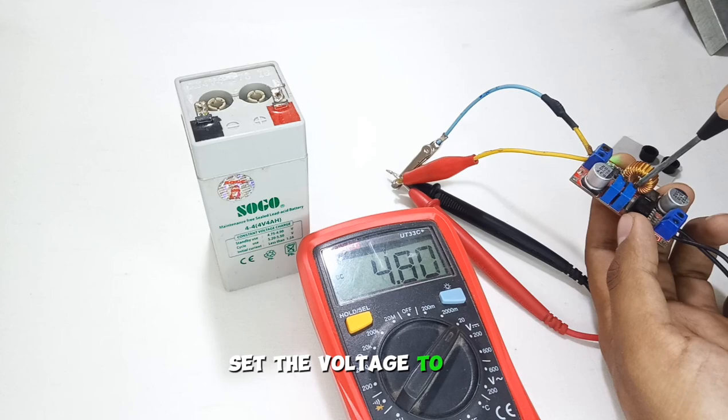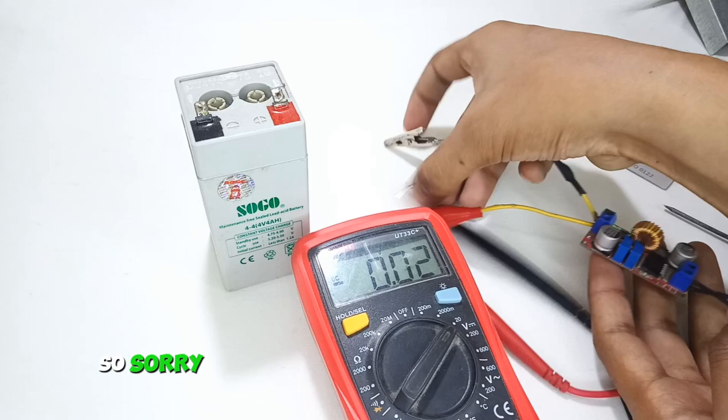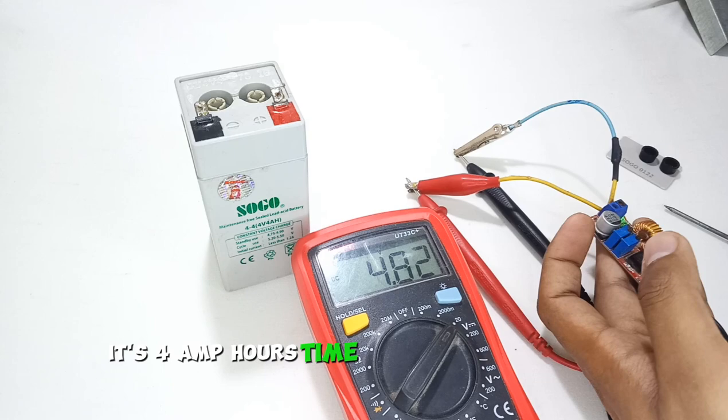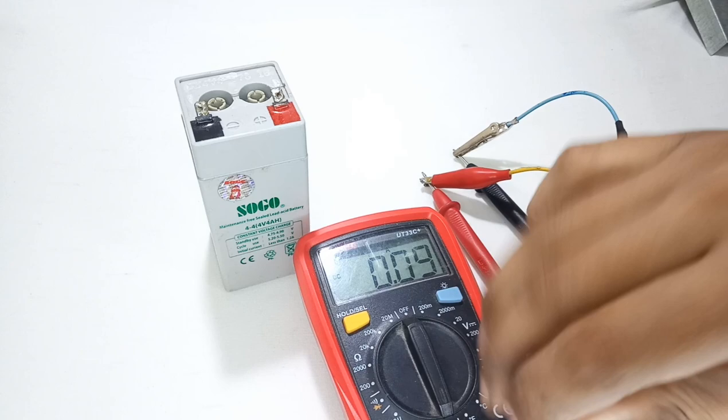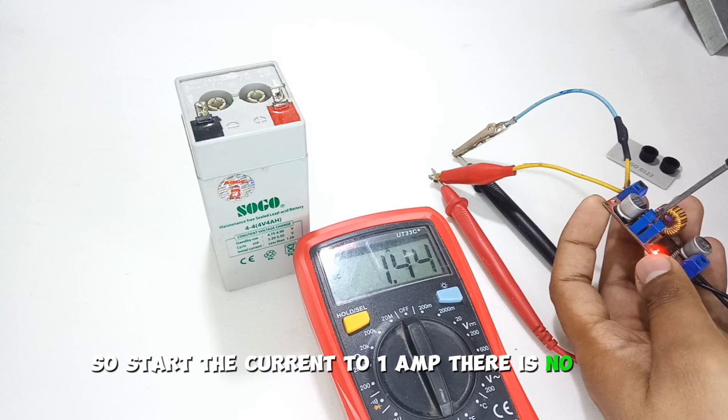Set the voltage to 4.8 volts. So sorry, I forgot about the charging current. It's 4 amp hours, so I will use 25 percent of its capacity. So set the current to 1 amp.